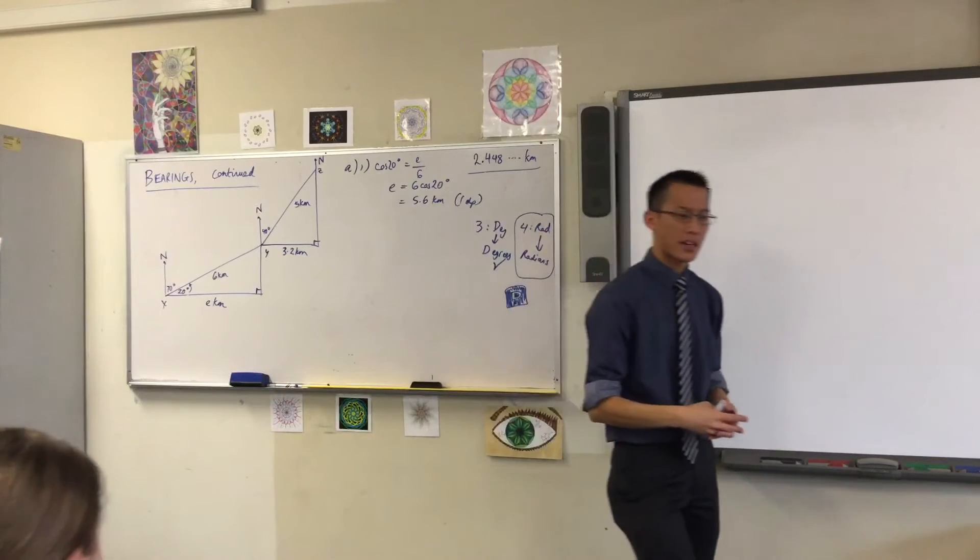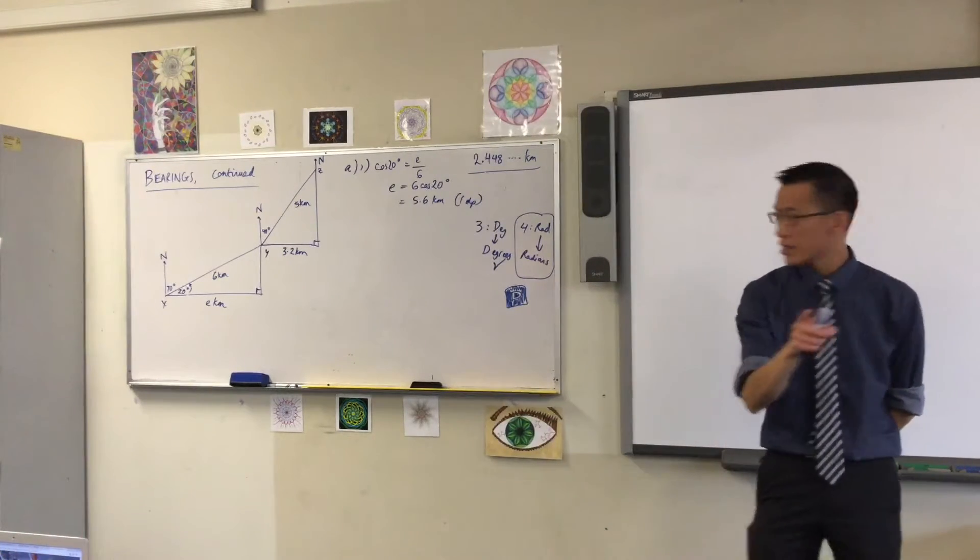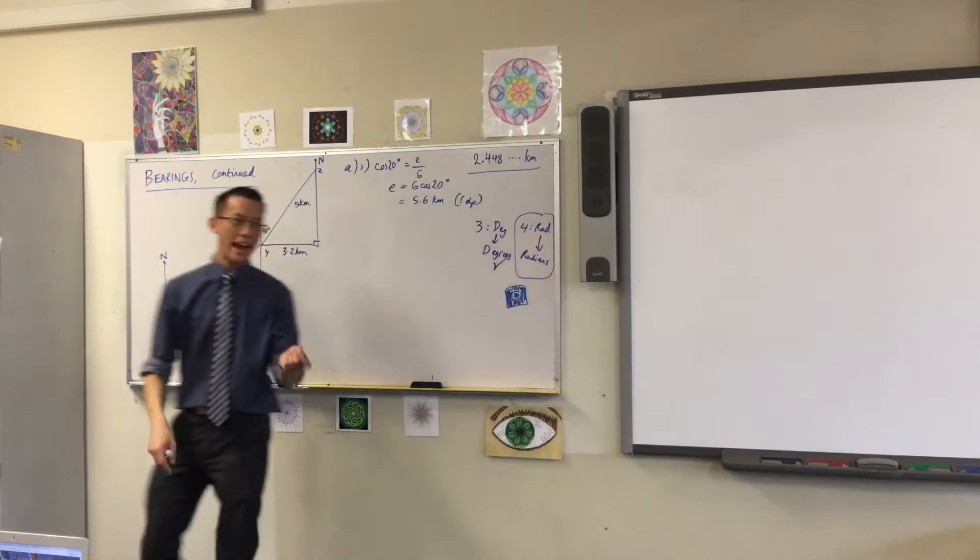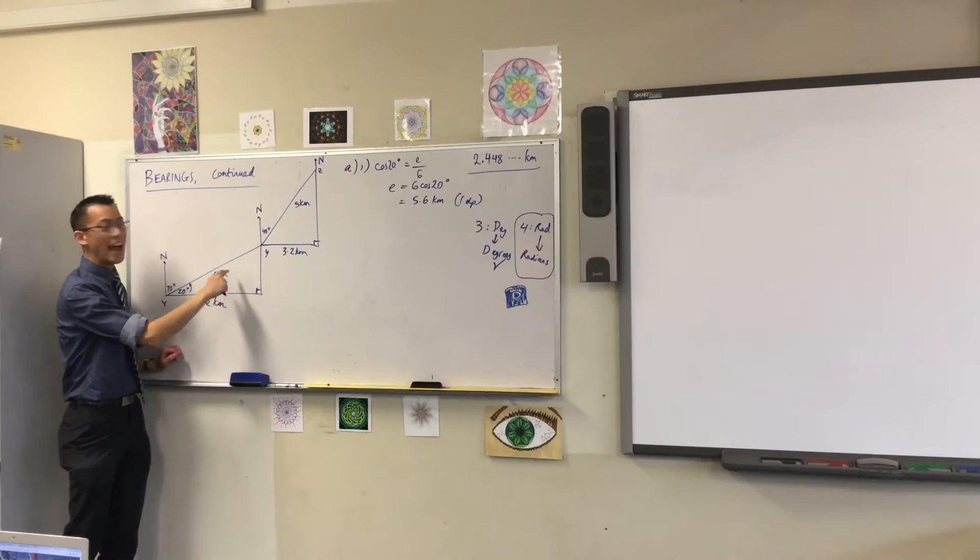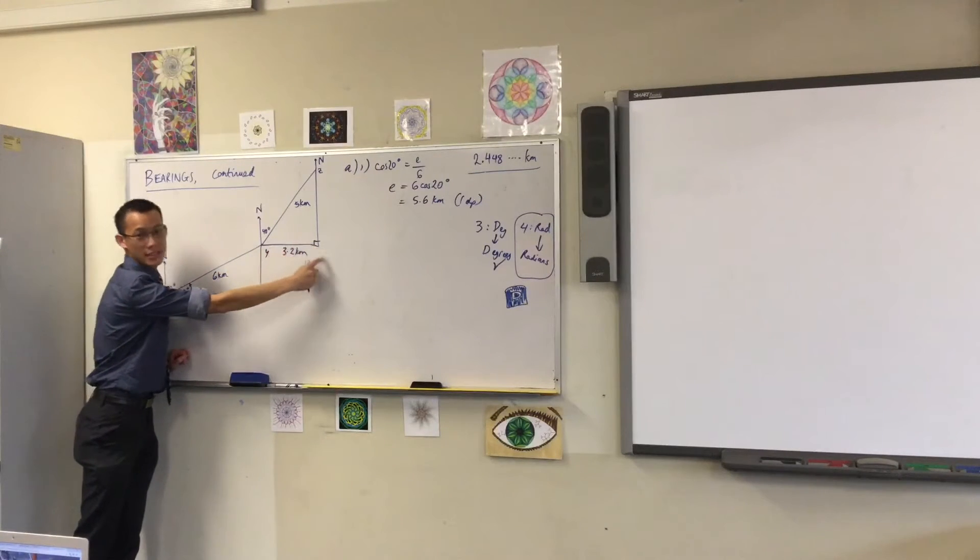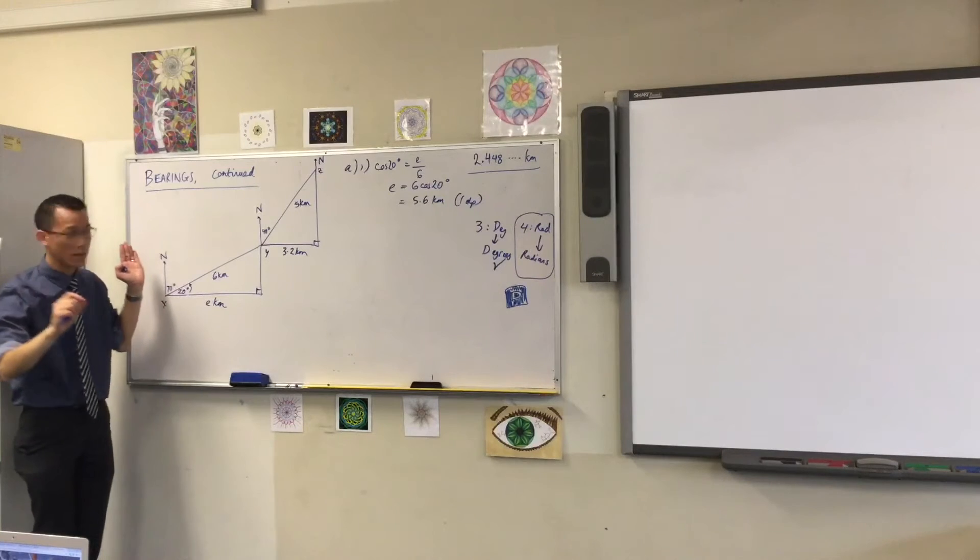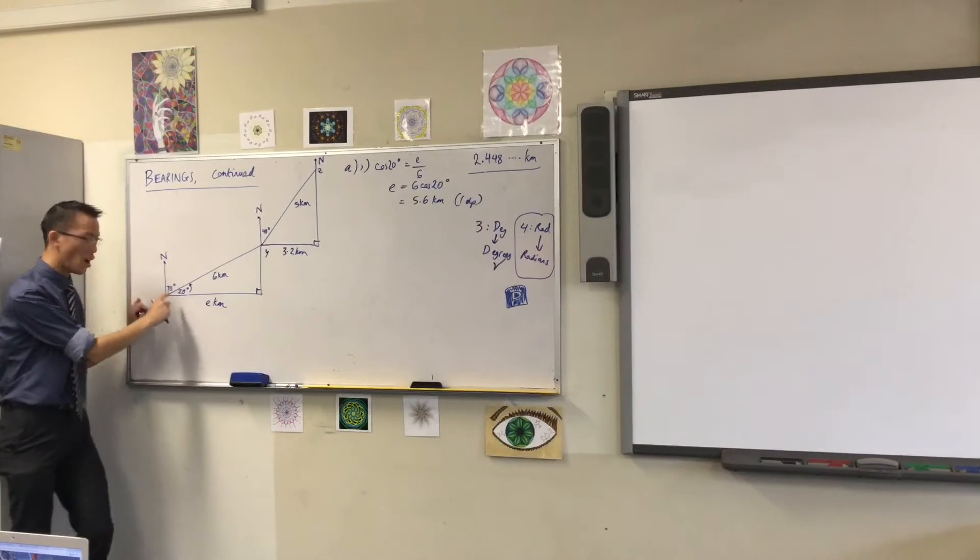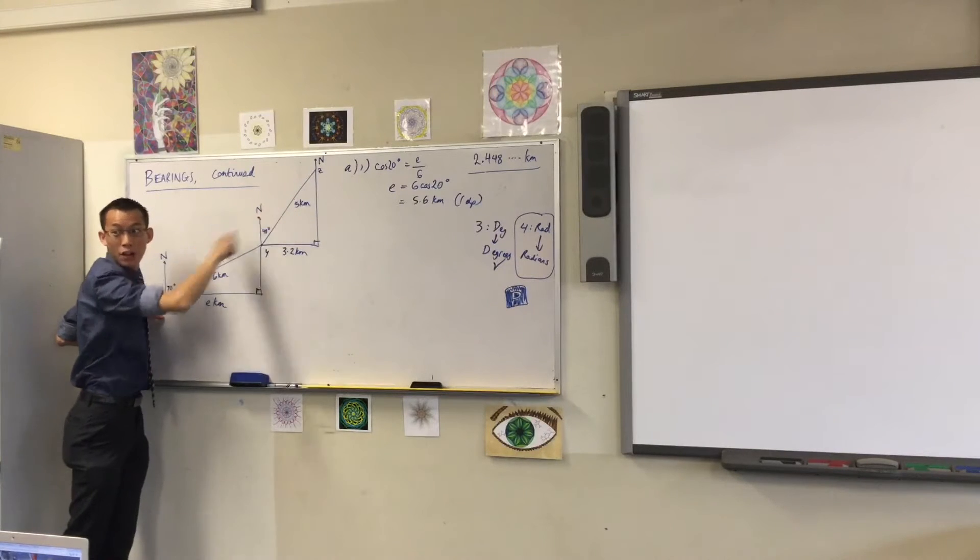Now, the next question doesn't require any more trigonometry. What they're asking for is not how far east of x is y, not how far east of y is z, they want to know the total. Do you see that? Read the question. They say, how far east of x is z? The whole distance.